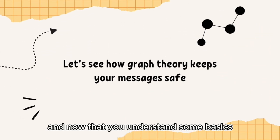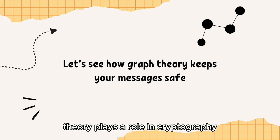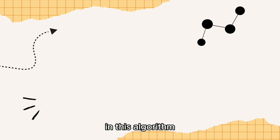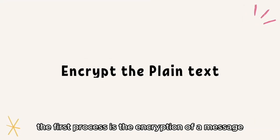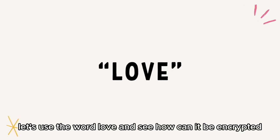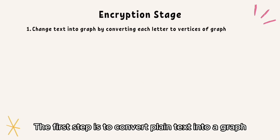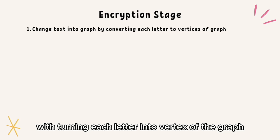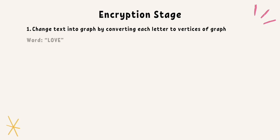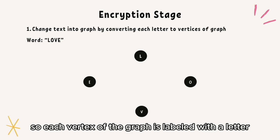Now that you understand some basic terminology in graph theory, it is time to explore how graph theory plays a role in cryptography. In this algorithm, the first process is the encryption of a message. For example, let's use the word 'love' and see how it can be encrypted. The first step is to convert plain text into a graph by turning each letter into a vertex of the graph. Since we have the word 'love', the vertices of our graph would be like this — each vertex of the graph is labeled with a letter.